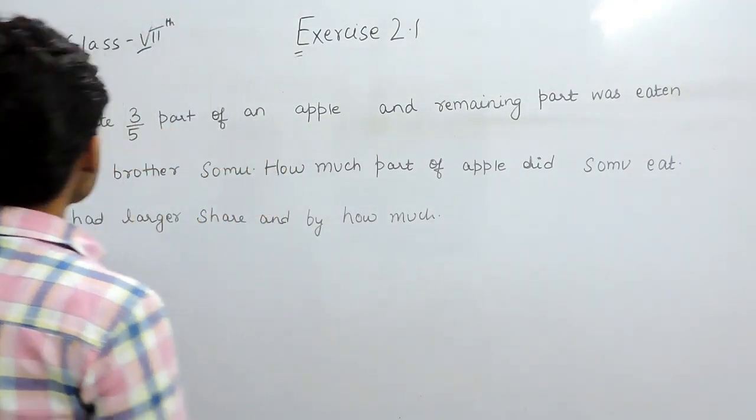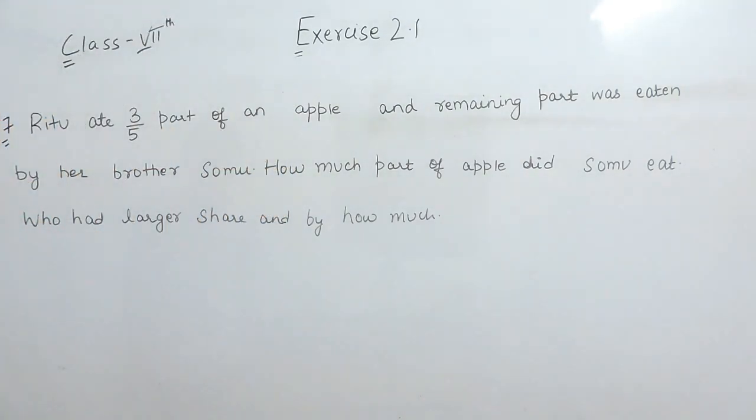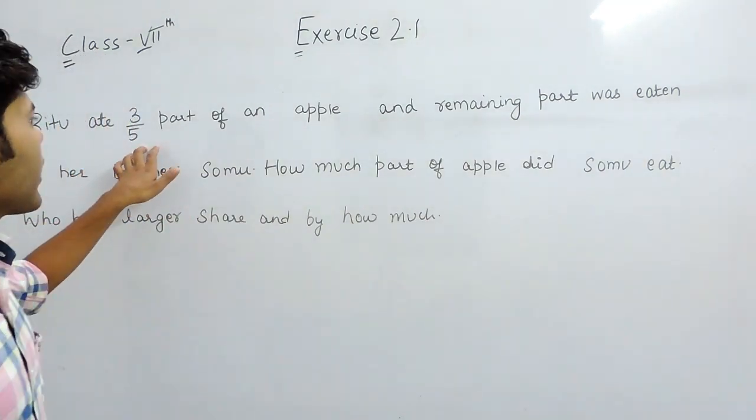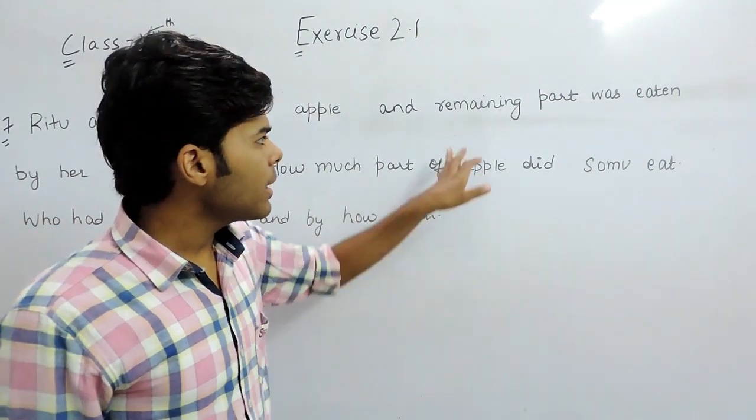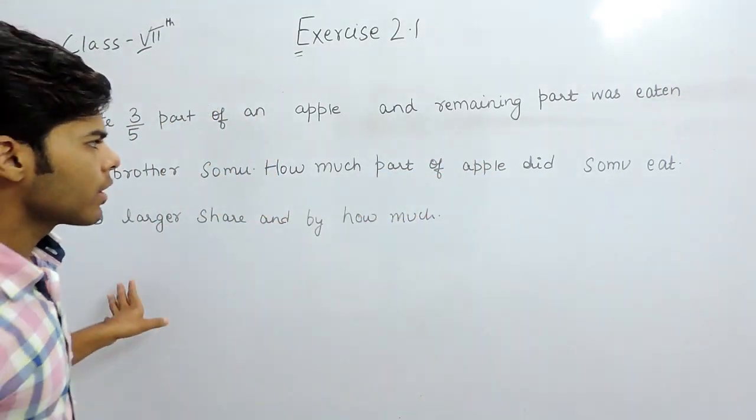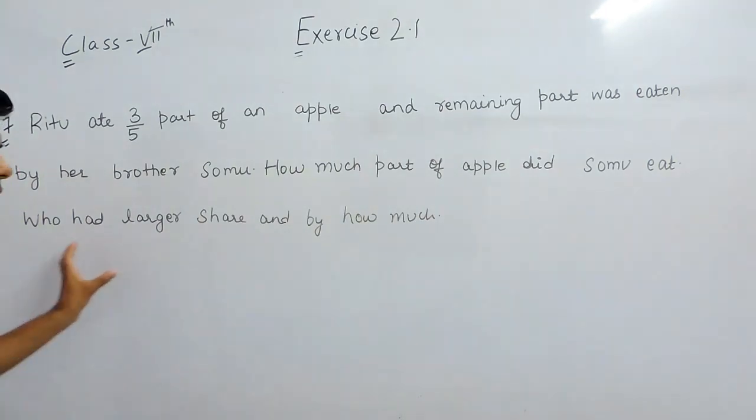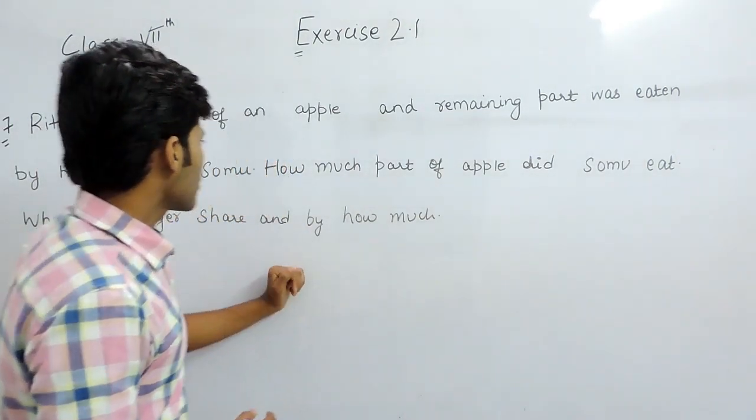Hello students, now I will solve the 7th question of exercise 2.1. This question says that a girl eats 3 by 5 part of an apple and the remaining part was eaten by her brother. How much part did her brother eat? Who had the larger part and by how much?